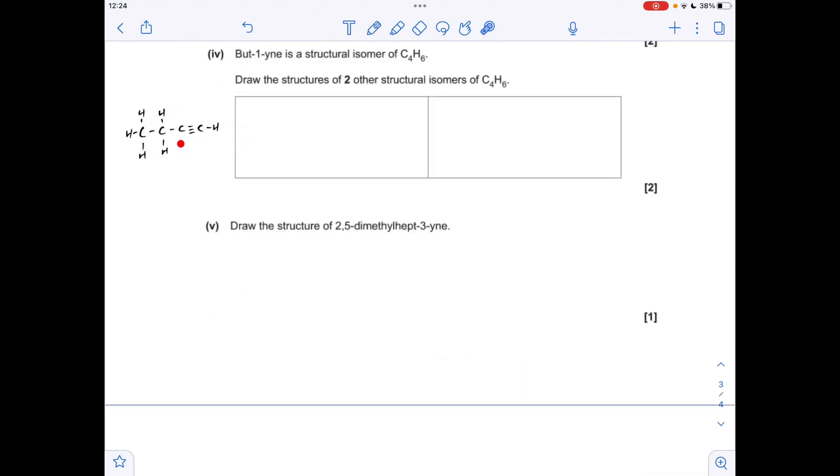Next part. So there's the structure of but-1-yne, so another two structural isomers with this C4H6 formula. So the first one we're going to do is just push the triple bond to carbon 2, so that will be but-2-yne. So there's the structure for that.